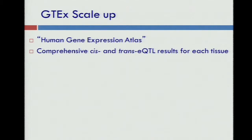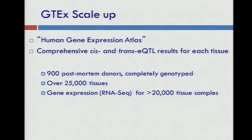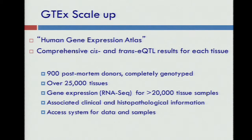At the end of scale-up, GTEx will provide a true atlas of human gene expression, as well as comprehensive cis and trans eQTL results for each tissue. The research will include around 900 post-mortem donors, completely genotyped. We expect to collect over 25,000 tissues and perform RNA sequencing on almost all of them. We will also have associated clinical and histopathological data available, along with results from a study of donors' families.